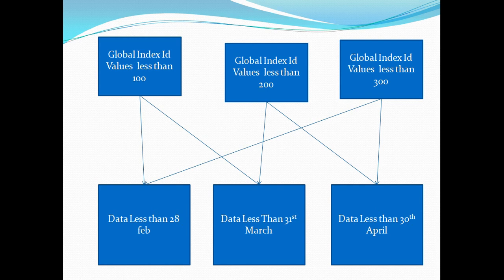This is one of the most important differences between local and global indexes: local indexes share the same boundary as the table, while global indexes can have data spanning different partitions. This is also a challenge with global indexes — Oracle does not maintain them automatically. We saw that when we dropped a partition, the corresponding local index partition was also dropped. That's not the case with global index: if you drop a table partition, the entire global index becomes unusable.